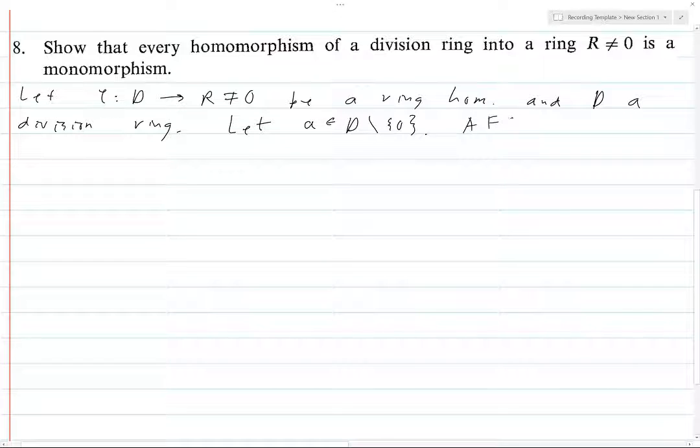So we're going to assume for contradiction that phi of A is equal to 0. It's not the greatest type of proof, but it'll work because it's simple enough.